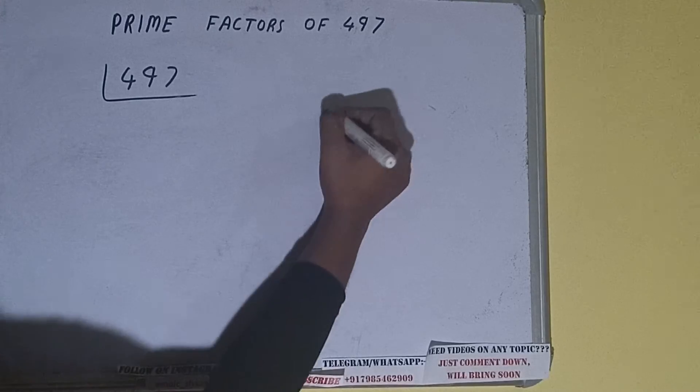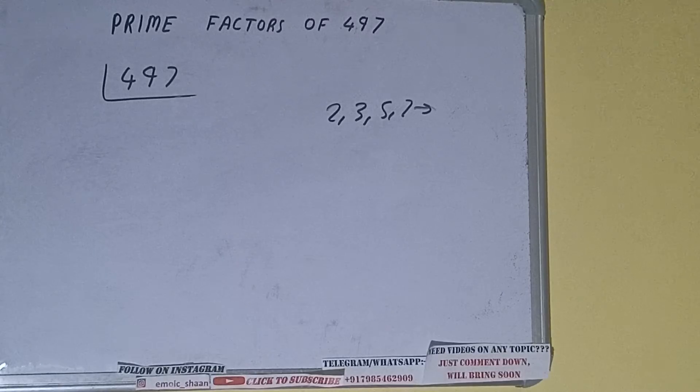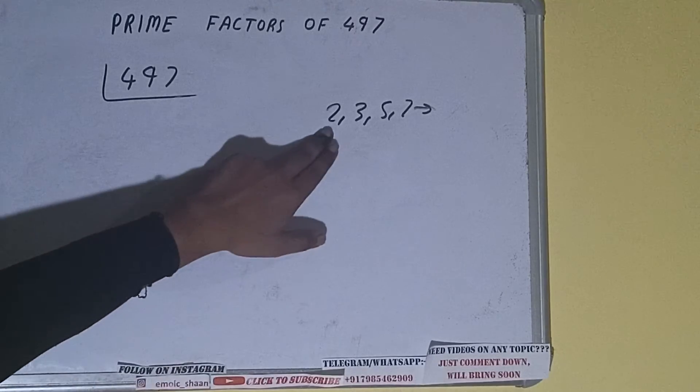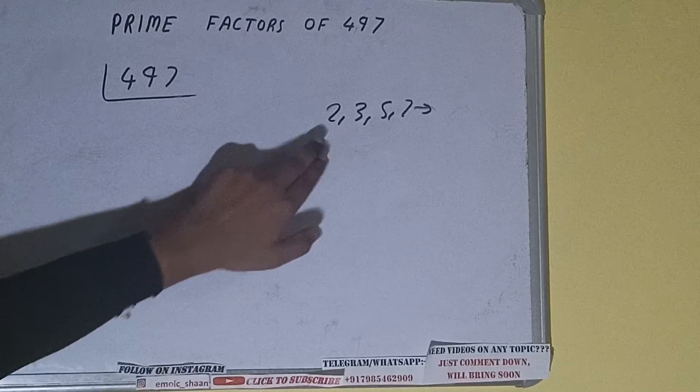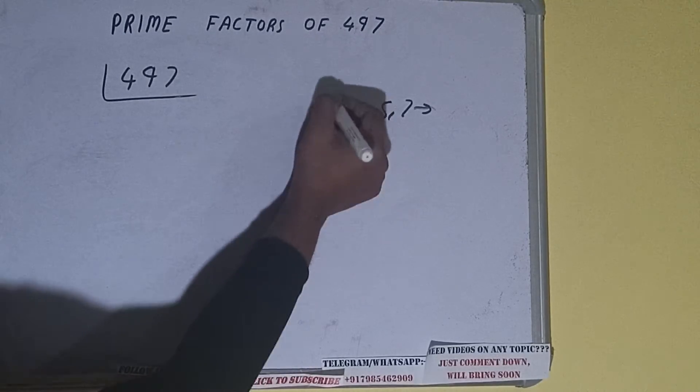We'll check with the lowest prime number, which is 2. Is 497 divisible by 2? It is not, because the number is odd. So we'll check with the next lowest prime number, that is 3. After applying the divisibility test, it is not divisible by 3 either.